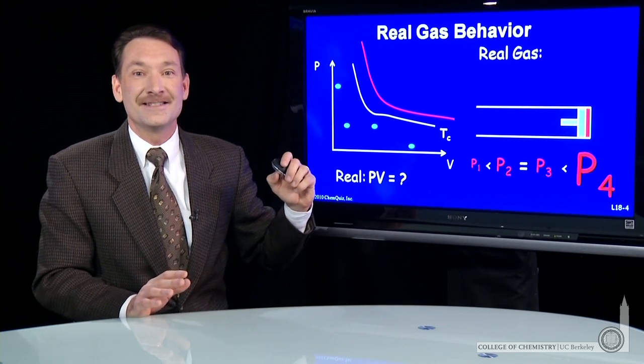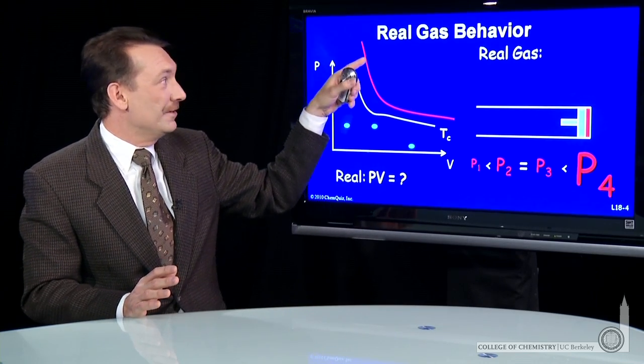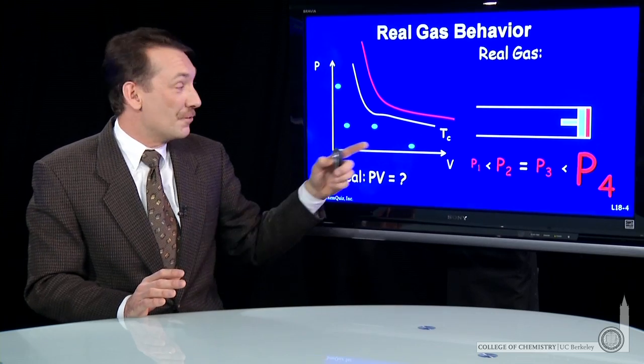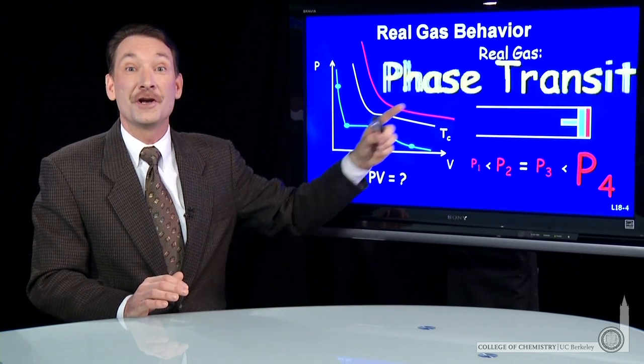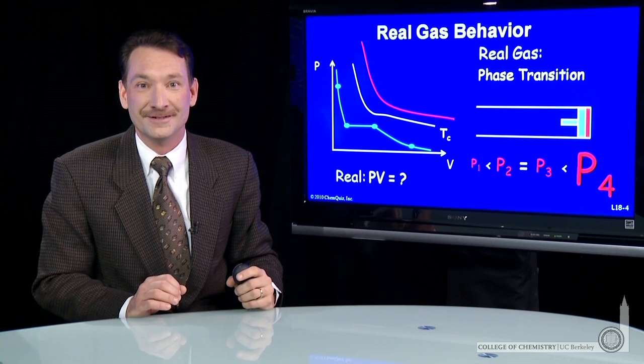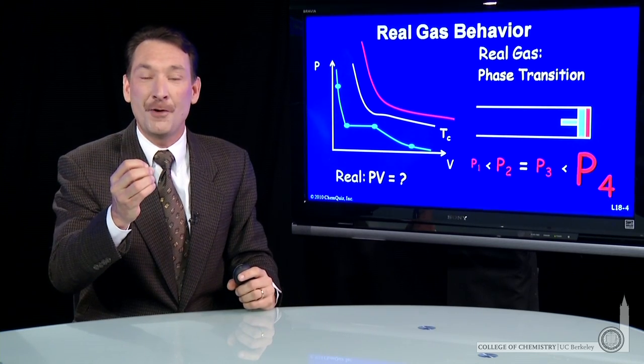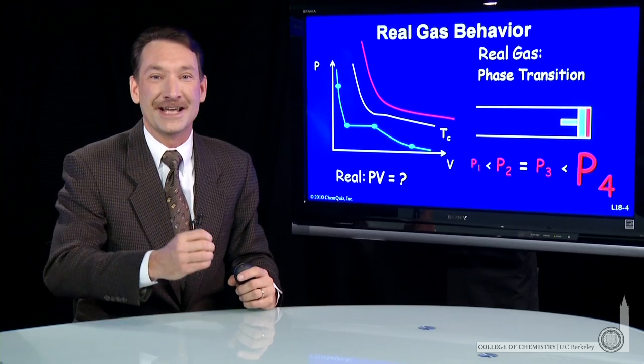So ideal gases, as you compress them, the compressibility decreases. Real gases, as you compress them below their critical temperature, will undergo a phase transition. Phase transition is the critical separating point between real and ideal gases.